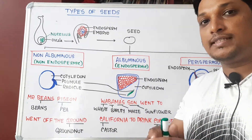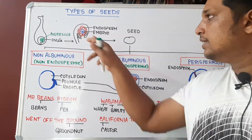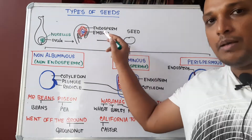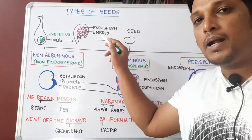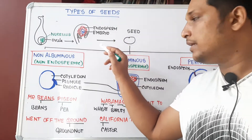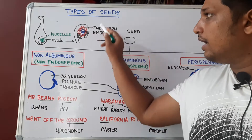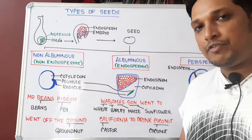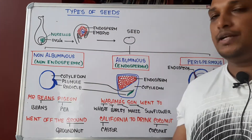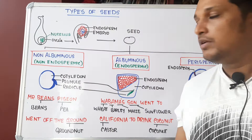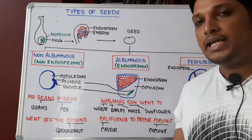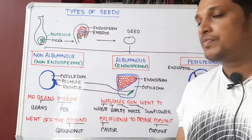The egg gets fertilized and is converted into an embryo. The embryo is a future plant — when it germinates, a new plant will emerge. The polar nuclei, fertilized by the male gamete, form the endosperm. The role of the endosperm is to nourish the growing embryo.